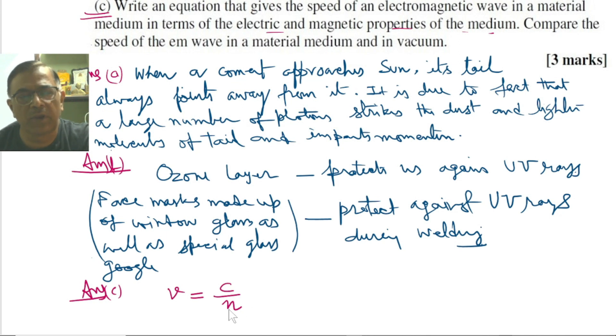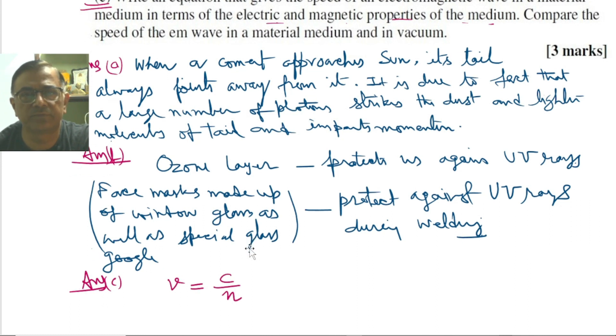Now next, the expression of refractive index in terms of electric and magnetic properties is given by the expression n equals the square root of epsilon R and mu R. Epsilon R is the relative permittivity and mu R stands for relative permeability.